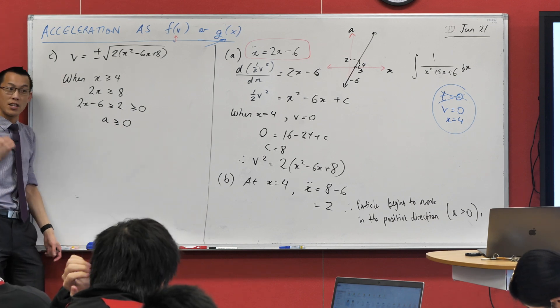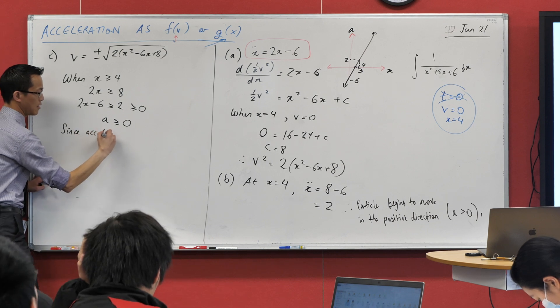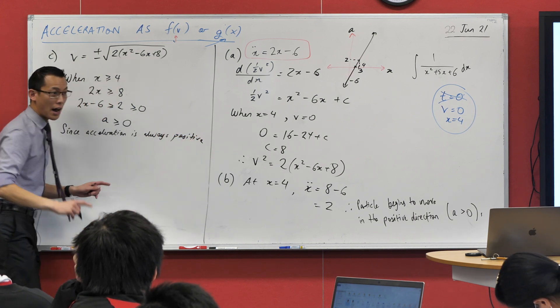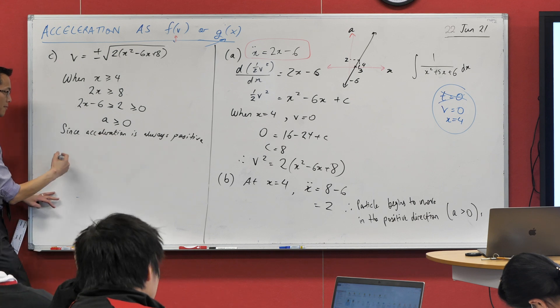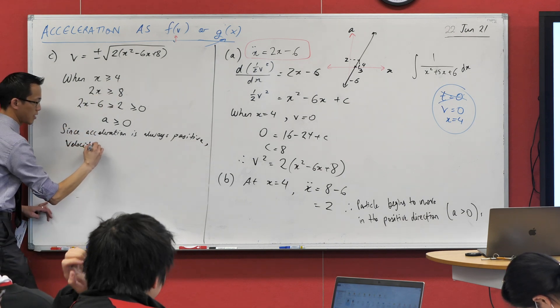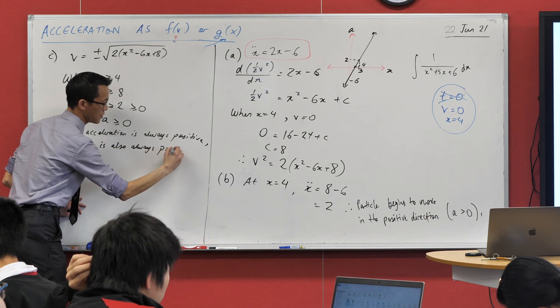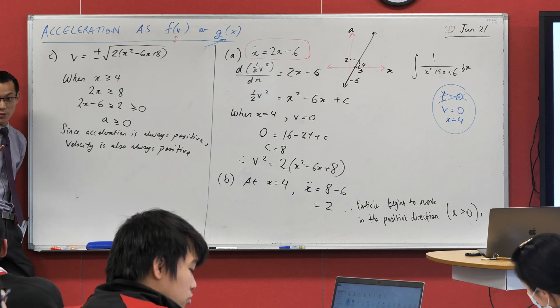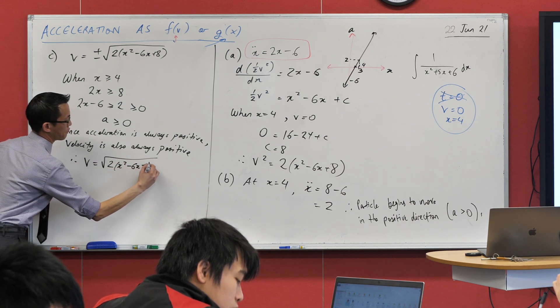So since acceleration is always positive, and you told me in part B that I begin moving in the positive direction, you're just going to go from positive to more positive. So since acceleration is always positive, velocity, in this case, because I start with positive and just get more positive, is also always positive. So therefore, of my two choices up here for V, which one is it? It's the one we had the instincts for before, but now we know the reasons for it. So I can say therefore V equals, and then I'm just going to take the positive one. Make sense?